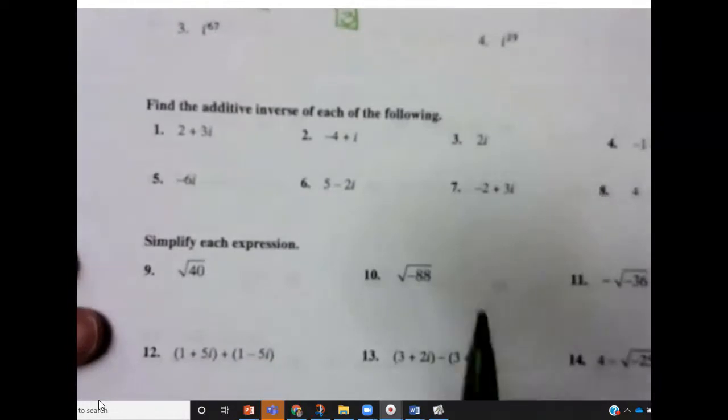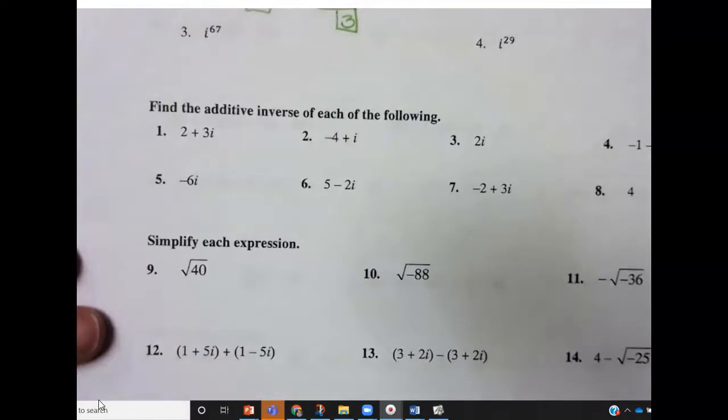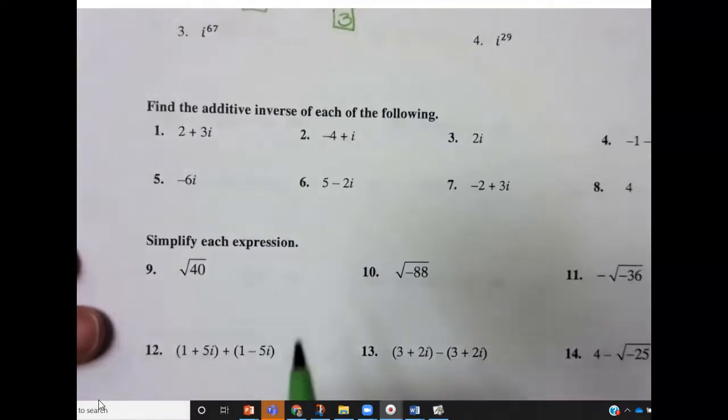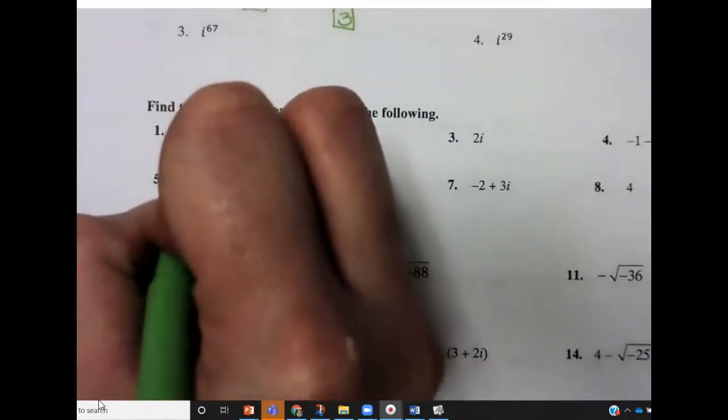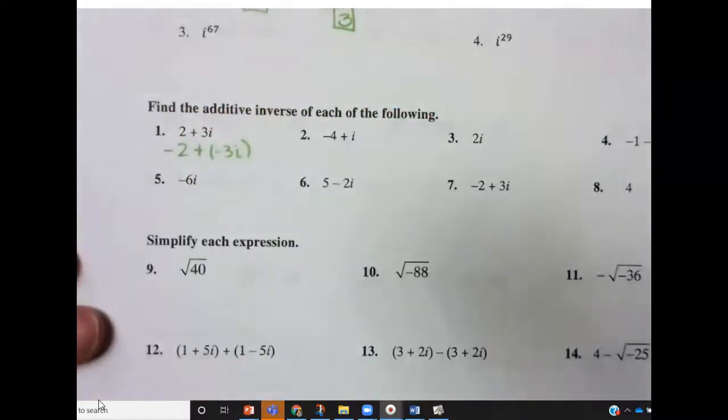The additive inverse, again different than the complex conjugate we talked about yesterday. The additive inverse is the opposite of both the real and the opposite of the imaginary. So it's negative 2 and negative 3i.